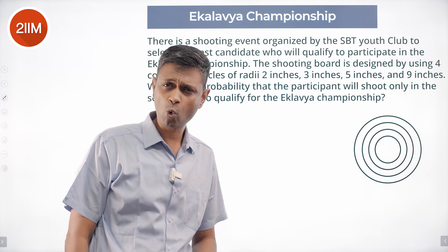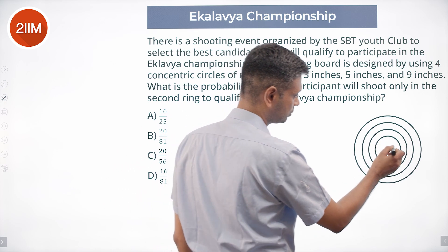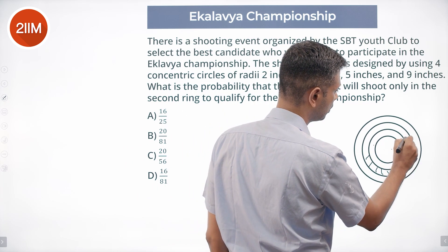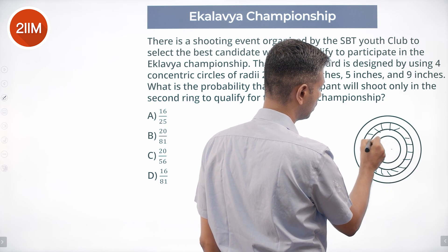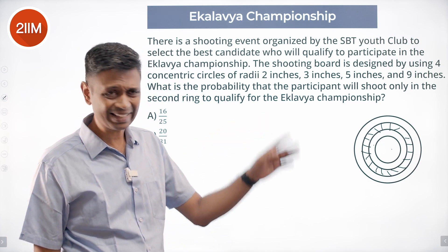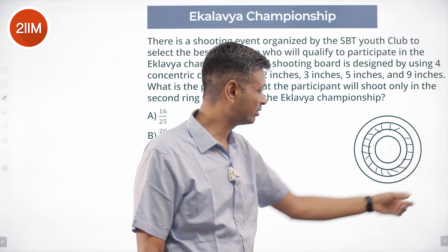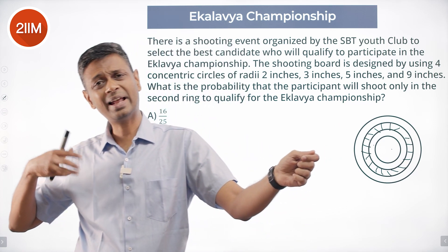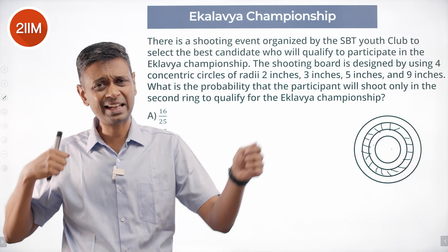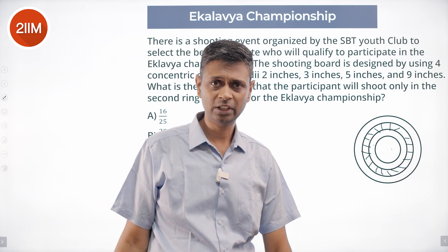Only in the second ring — with radii 2 and 3 forming the first ring, this is the second ring. What is the probability the person will shoot exactly in the second ring? It's the area of the second ring divided by the area of the big circle, assuming the shot lands somewhere in the big circle. Given that it lands in the big circle, what is the chance it lands in the second ring?